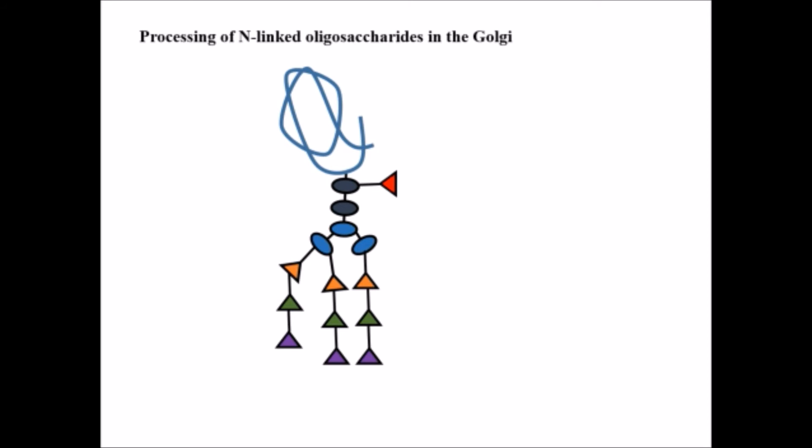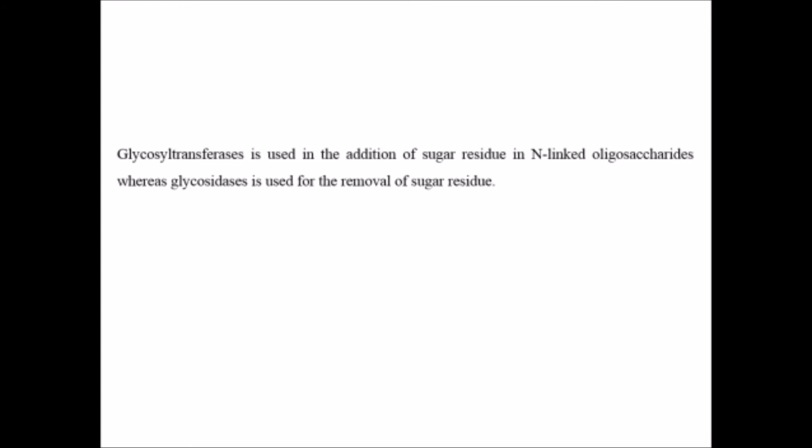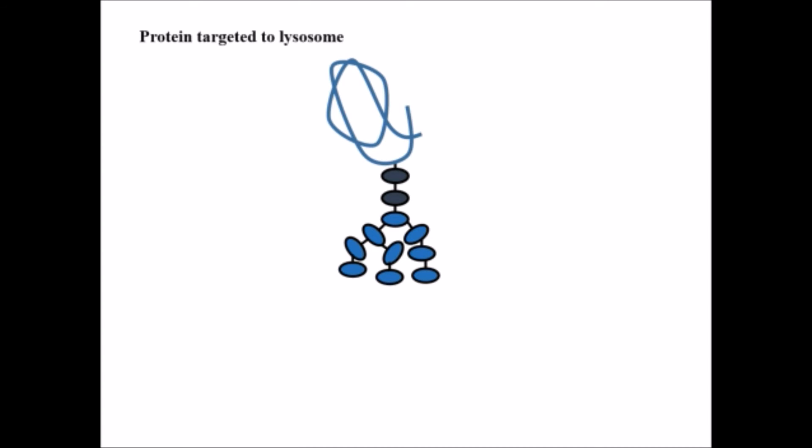What is the significance of this glycosylation? It provides certain markers for the transportation and function of proteins. Certain enzymes are used in the glycosylation process: glycosyl transferase is used for addition of sugar residues in N-linked glycosylation, whereas glycosidase is used for removal of sugar residues. Glycosylation adds certain markers to proteins.